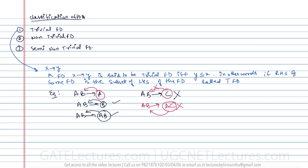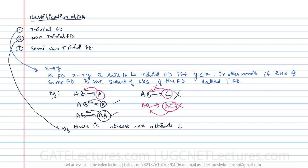The next type is the non-trivial functional dependency, which is kind of opposite to the trivial one. If a functional dependency is not trivial then it is non-trivial. You can say if there is at least one attribute in the right-hand side that is not part of the left-hand side, then such a functional dependency is called a non-trivial functional dependency.